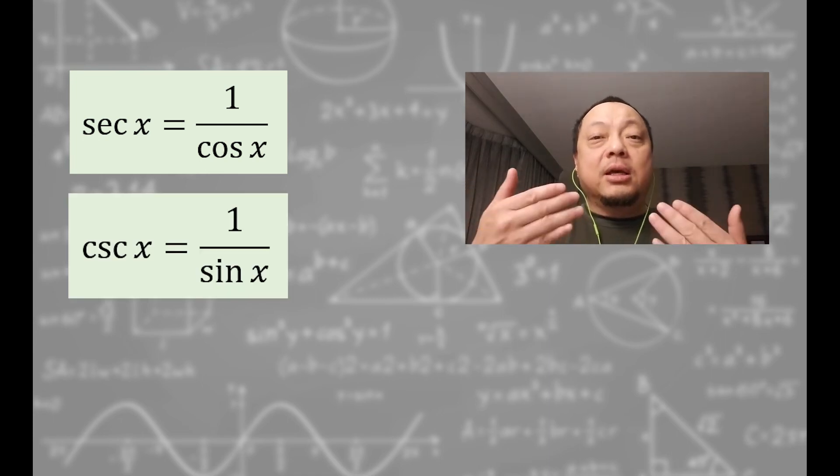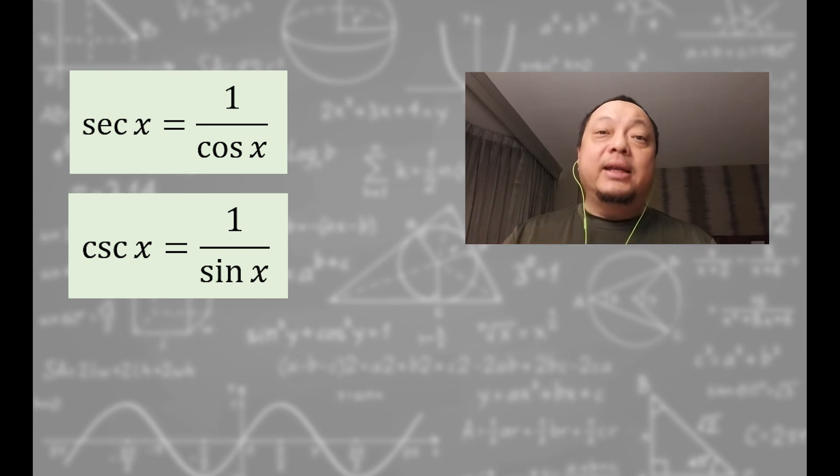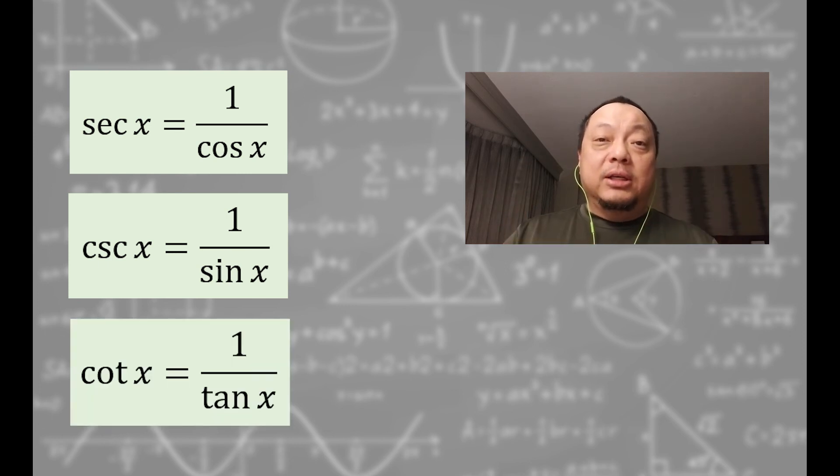Likewise, cosecant is 1 over sine. And cotangent is 1 over tangent. So find the sine, find the tangent, and then take the reciprocal.